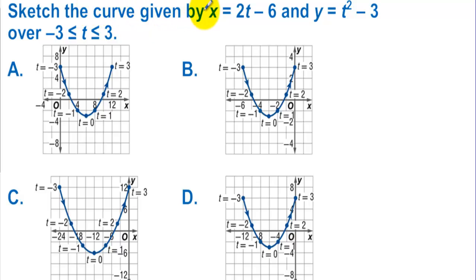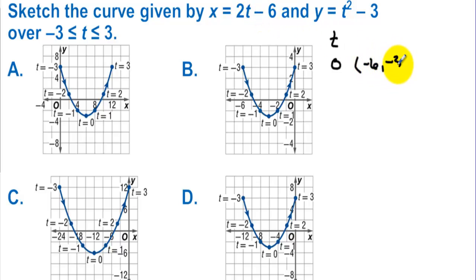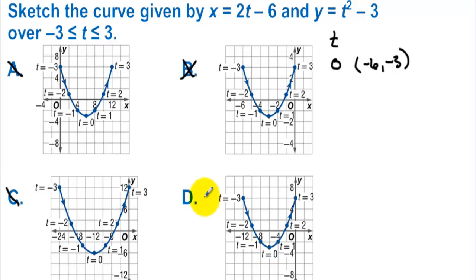Sketch the curve given by x = 2t - 6 and y = t² - 3 over negative 3 to 3. Let's pick t = 0, which is usually the easiest to plug in. When we pick 0, we have x = negative 6 and y = negative 3. Looking at the answer choices: option A doesn't have the point (negative 6, negative 3), option B has (negative 6, 3), option C has negative 6 but not negative 3 there. Option D does have the point (negative 6, negative 3), so it's got to be letter D.